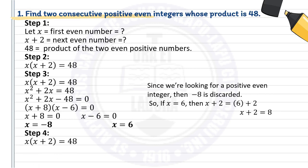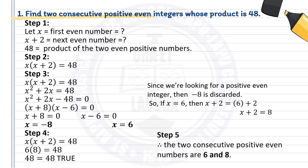Step 4: Do the checking. Write the equation x times (x + 2) equals 48, and substitute x with 6. That gives 6 times 8 equals 48, and 48 equals 48 — that is true. Step 5, conclusion: Therefore, the two consecutive positive even integers are 6 and 8.